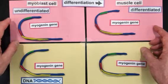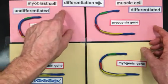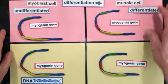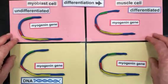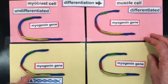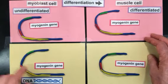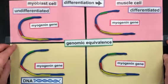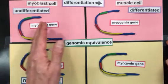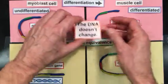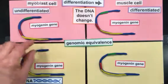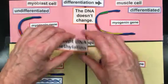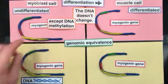We have our two familiar cells — our undifferentiated myoblasts, that can undergo differentiation to produce the differentiated muscle cells in our body. I've made the blue clay model representing the DNA of the myogenin gene. Each cell in our body has the myogenin gene due to genomic equivalence, meaning during differentiation the DNA doesn't change — with one important exception called DNA methylation.